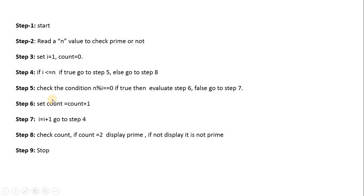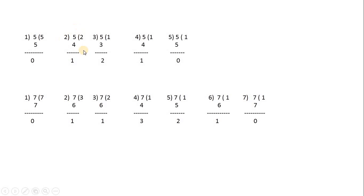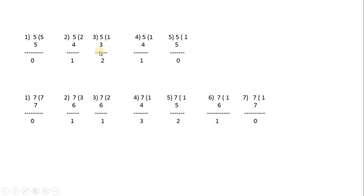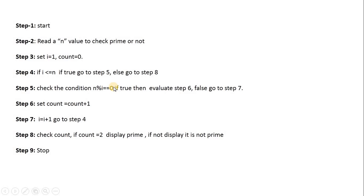In step 4, 2 ≤ 5 is true, go to step 5. Check 5 % 2 == 0: remainder is 1, not 0 — false. Go to step 7: i becomes 3. Back to step 4: 3 ≤ 5 is true, go to step 5. Check 5 % 3 == 0: remainder is 2, not 0 — false. Go to step 7: i becomes 4.